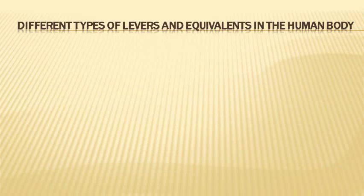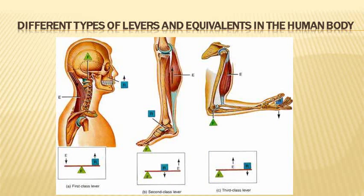There are three different types of orders of levers, and all are found in the human body. An example of each can be seen here with an example of where they are on the body.